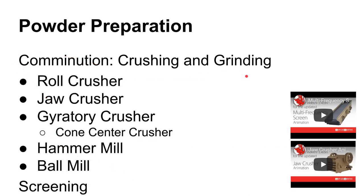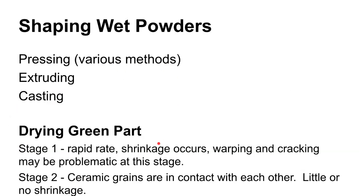In industry, incoming powder often has already gone through preparation processes. It's useful to know about comminution machines — equipment for crushing and grinding ceramic materials. Key examples to be familiar with are the ball mill and the hammer mill.